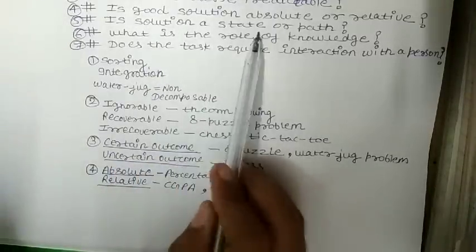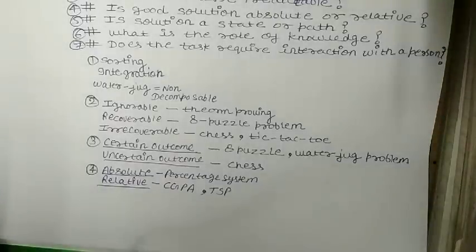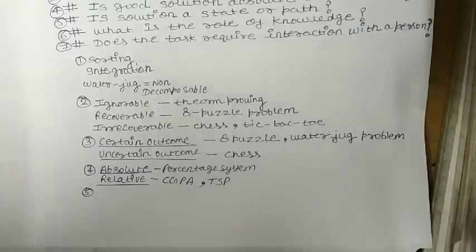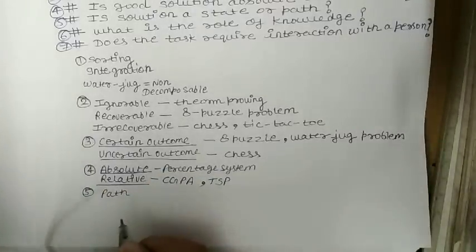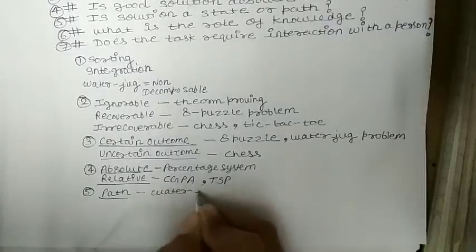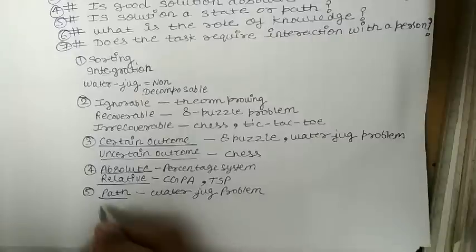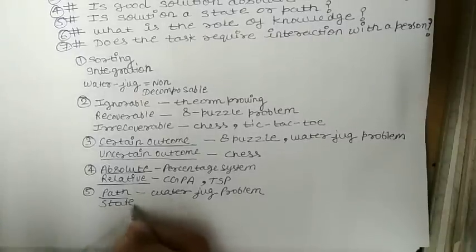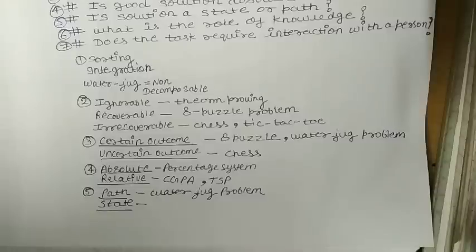The fifth characteristic is: is solution a state or path? That is, is the desired solution a state of the world, or a path to the state? For path problems, we know our destination. The example is the Water Jug problem, in which we know our destination and our goal.